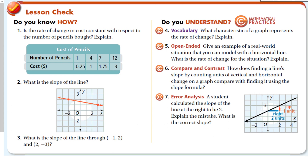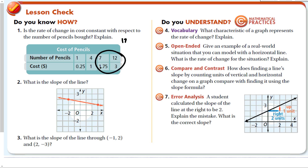Is this rate of change constant? Looking at the table, values increase by 75 cents for every 3 pencils added — 0.75 / 3 = 25 cents per pencil. Checking with two points: (12 − 7) / (3 − 1.75) gives 25 cents. The rate of change is constant at 25 cents per pencil.